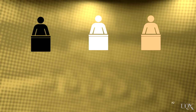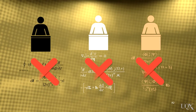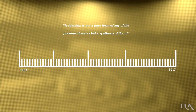Up to this point, each of the theories had emerged pretty much in isolation. Each of them tried to explain the leadership equation, but separately they had failed. The next phase of leadership theory leads us to the last 50 years, where it has been recognised that leadership is not a pure form of any of the previous theories, but rather a synthesis of them.